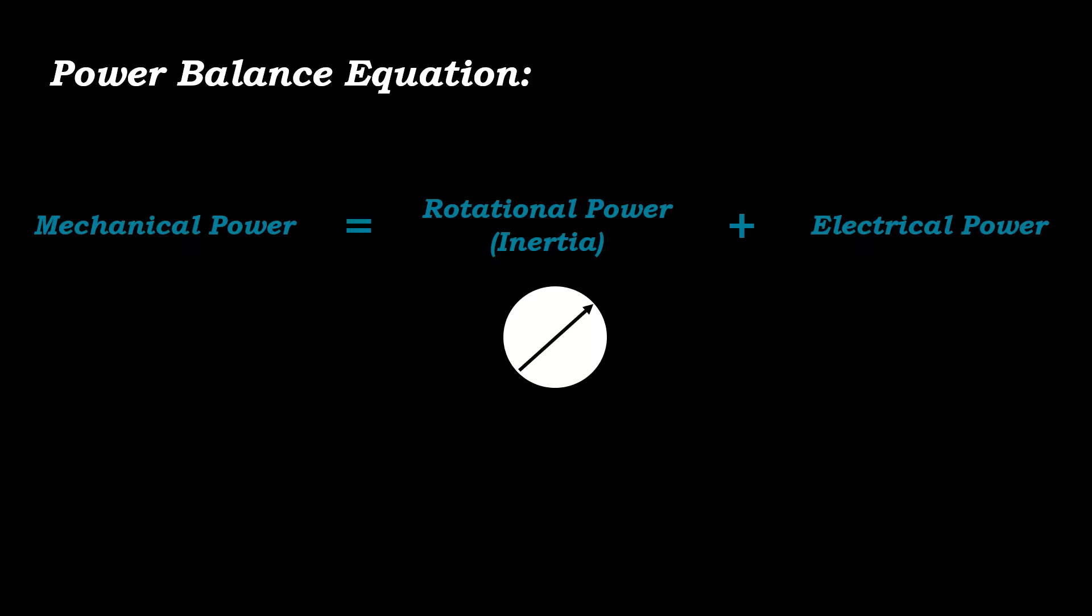Okay, let's start the topic. The power balance equation for synchronous generator is given by mechanical power equals rotational power, that is stored inertia, plus electrical power. Input power comes from turbine which rotates the rotor. It can come from steam, water, or gas.